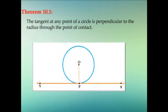Looking at the diagram: we have a circle with center O and a tangent line XY. Point P is the point of contact on the circle. The tangent at P is the line XY, and the radius OP must be perpendicular to XY — this is what we are going to prove. Given: O is the center of the circle, OP is its radius, and XY is the tangent through the point P. To prove: OP is perpendicular to XY.